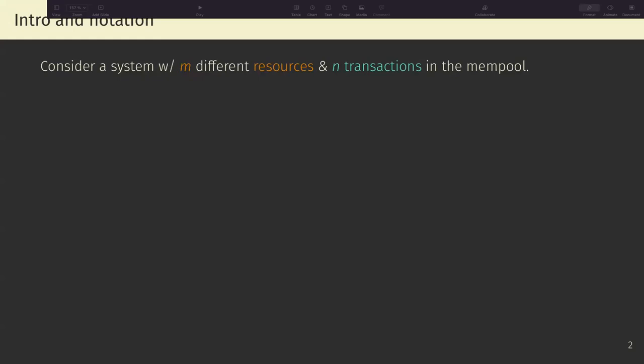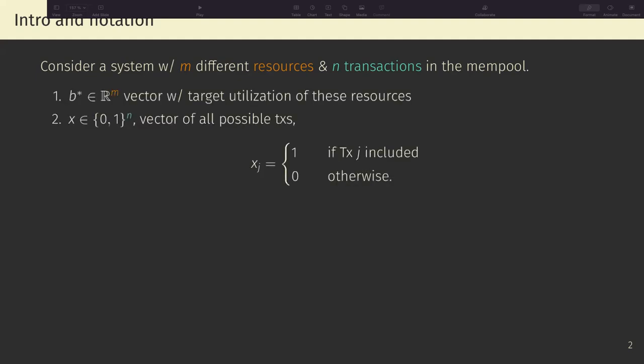So let's consider a system with m different resources and n transactions in the mempool. m here can be the number of lanes or if we're using lanes and something demand-based or whatever. Now let's define b star as a vector with the target utilization of these resources. So b_i is the target of resource i. And let's define x as this vector that takes values of 0 and 1 that has a length n that includes all possible transactions in such a way that the j-th component of x is 1 if the transaction is included and it's 0 otherwise.